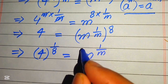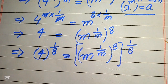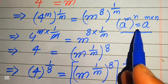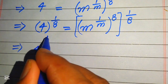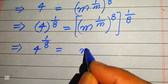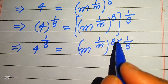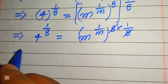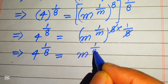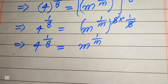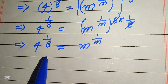We write it as m to the power of 1 over m, with its whole exponent being 8, and we apply the 8th root by taking 1 over 8 power on the right hand side. Applying the exponent law again, the two exponents are multiplied, giving us 4 to the power of 1 over 8 equals m to the power of 1 over m. Notice that on the right hand side the exponent is the reciprocal of its base, and we need to make the same condition on the left hand side.